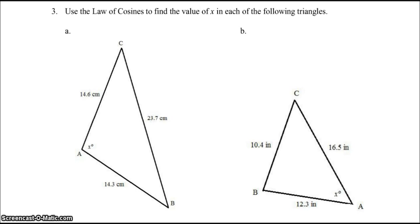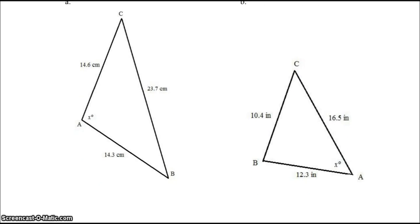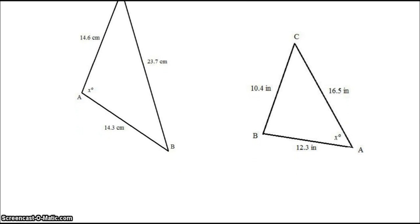Use the law of cosines to find the value of X in each of the following triangles. All right, so here, the law of cosines would tell us that 23.7 squared would equal 14.6 squared plus 14.3 squared, minus 2 times 14.6 times 14.3 cosine of X.